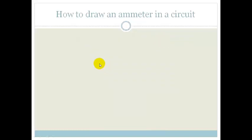So how do we draw an ammeter? Here we go again. So here is your battery, and there's your circuit, and there is your light bulb. And this time, I have to make space for an ammeter because the ammeter is actually going to be part of my circuit.